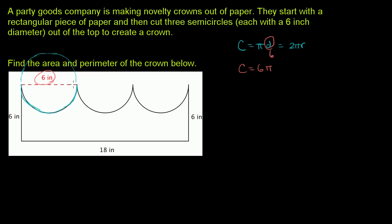If we think about the length of one of the semicircles, it's going to be half of this — it's half the circle. So this length right over here is going to be 3 pi. And then the next one is the exact same length, 3 pi again. And then this one over here is going to be 3 pi again — half of the circumference of the entire circle.